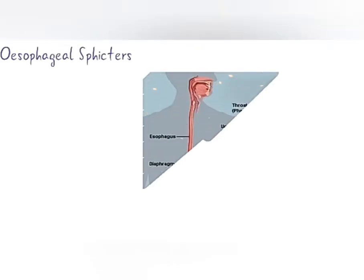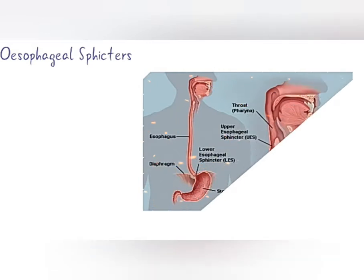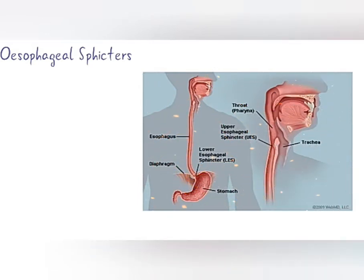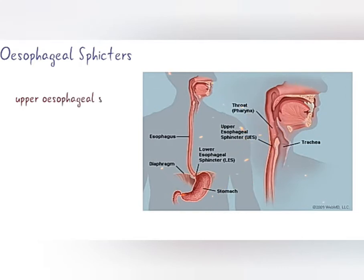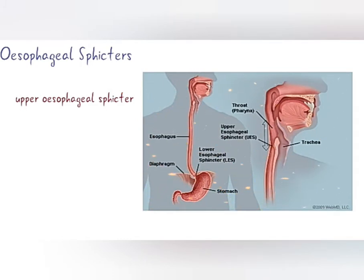Let's see the esophageal sphincters. There are two esophageal sphincters: upper esophageal sphincter and lower esophageal sphincter. The upper esophageal sphincter is anatomically a striated muscle sphincter at the junction between pharynx and esophagus. It is produced by the cricopharyngeal muscle. Normally it is constricted to prevent the entrance of air into the esophagus.